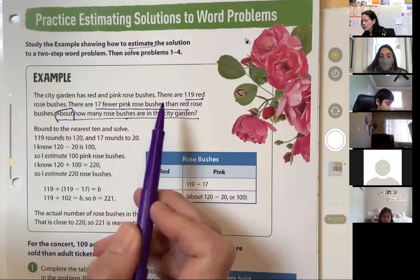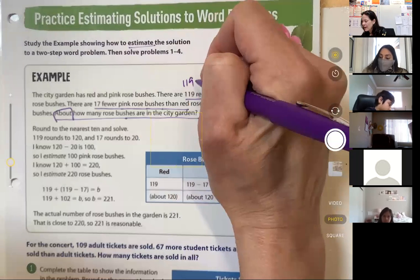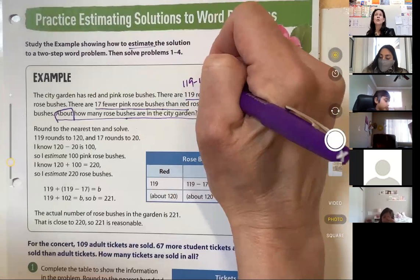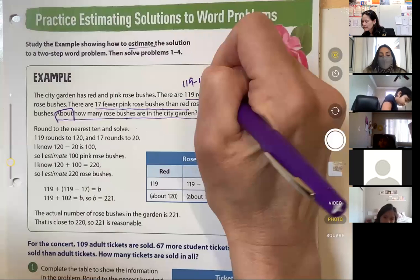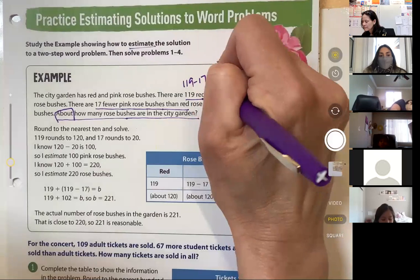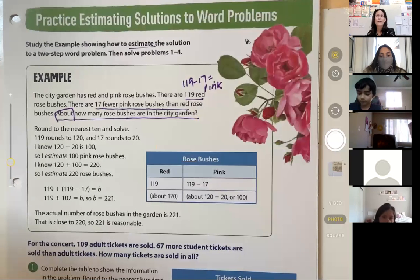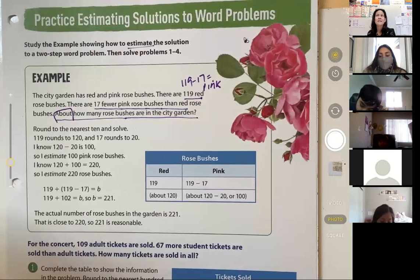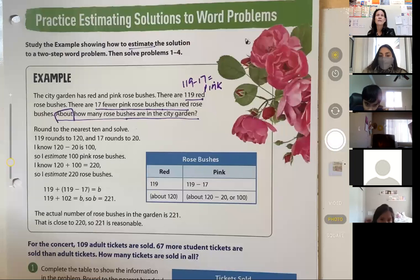It's the original 119, and you're going to take out the 17 fewer. That equals pink. Be very, very careful, friends, when you are reading these questions. They're meant to see if you're paying attention. All right? So now we've marked it up. Now we know what we're doing. Here we go.